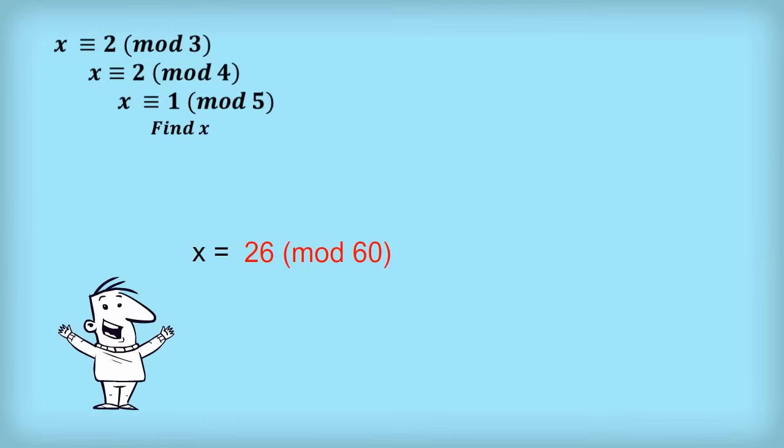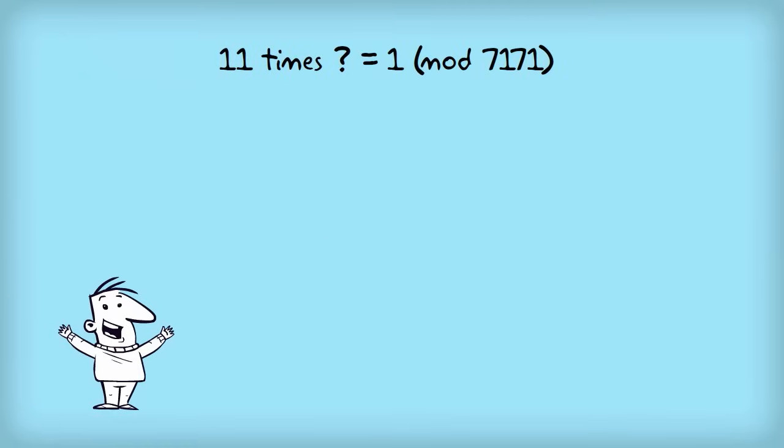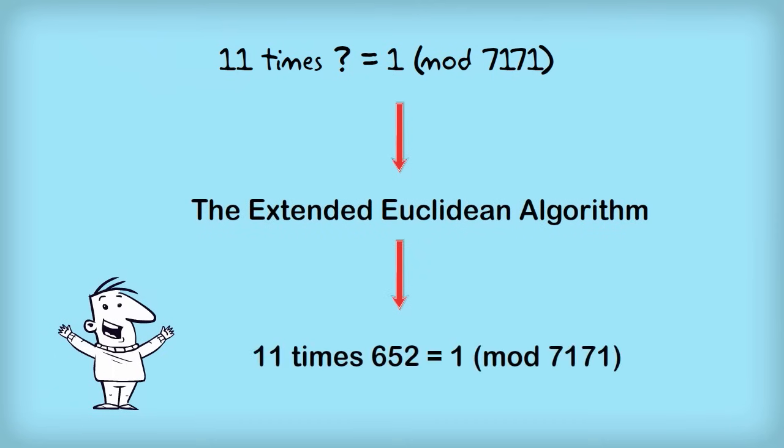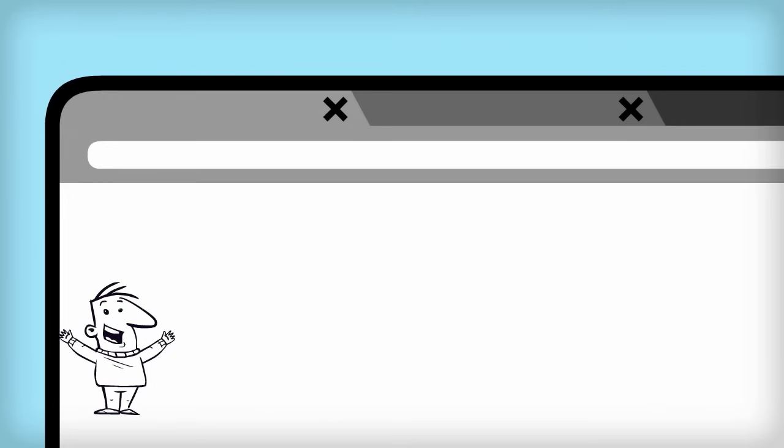Recently, I had to work out what to multiply 11 by to get 1 mod 7171. Here, you need to use the extended Euclidean algorithm. At some stage, I'll do a video on finding inverses in modular arithmetic. But in the meantime, you can search for it on the web.